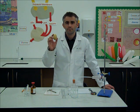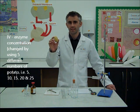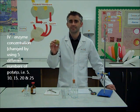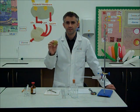We're going to use some potato discs in order to change the enzyme concentration. We're going to assume that each disc contains the same amount of enzyme and we're just going to change the number of discs to change the concentration of the enzyme.